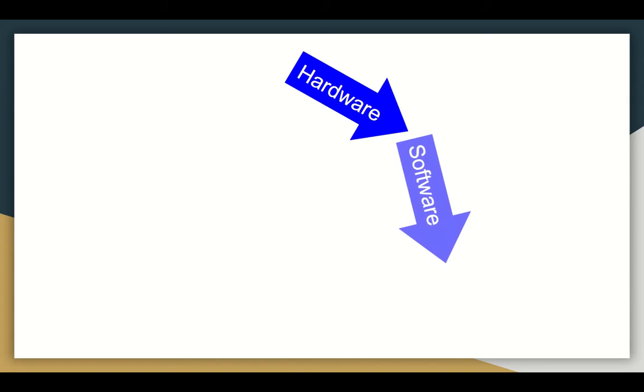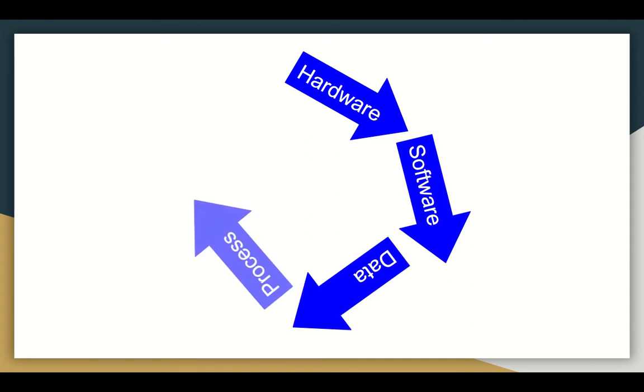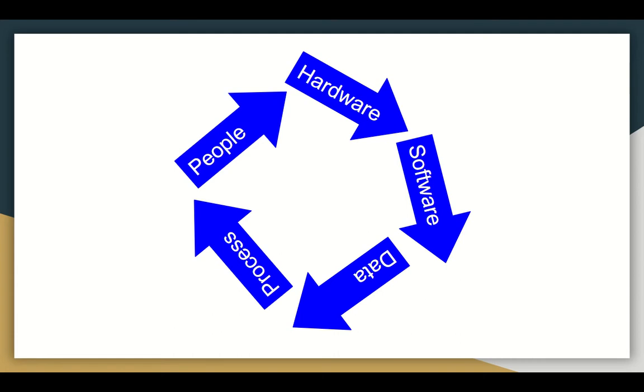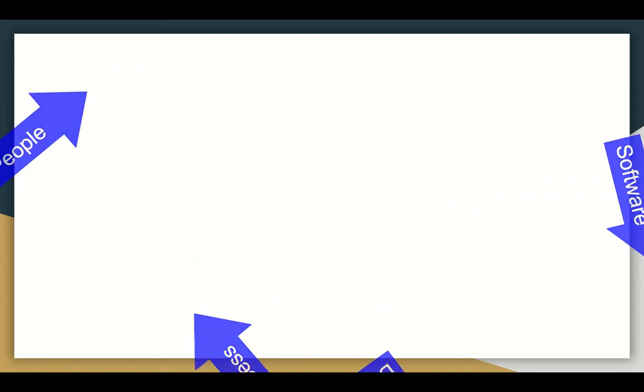Every computer-based system is made up of five components: hardware, software, data, processes, and people. They're all working together and they're all interlinked. If you take one part of it away, everything else sort of stops working and disappears.